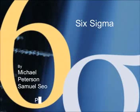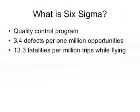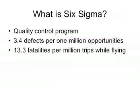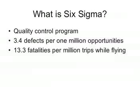This is Six Sigma, as anchored by Michael Peterson and Samuel Ciel. Six Sigma is a quality control program that has been widely used and recognized by industry. The goal of Six Sigma is to have fewer than 3.4 failures per 1 million opportunities. This probability is even lower than the odds of fatality during air trips, which is about 13.3 fatalities per million trips. Therefore, there is essentially zero defects within a process.